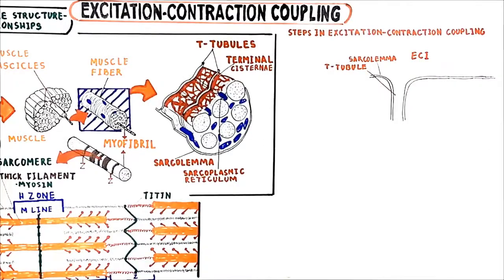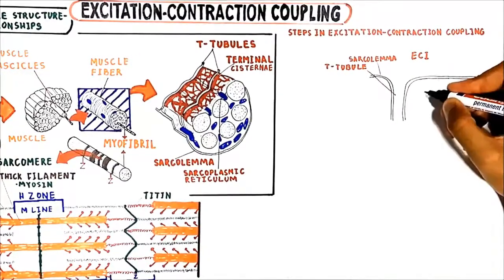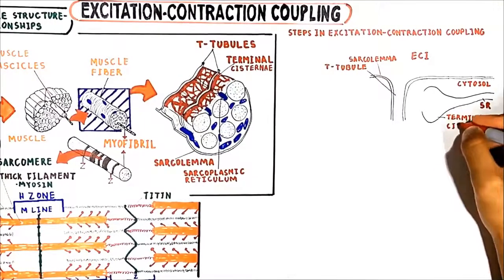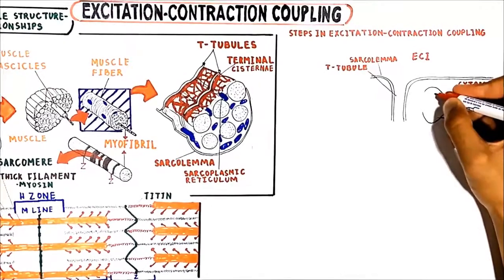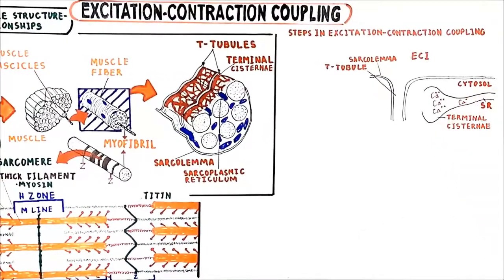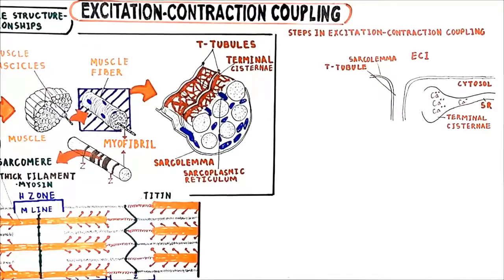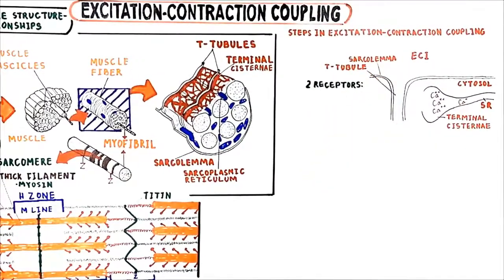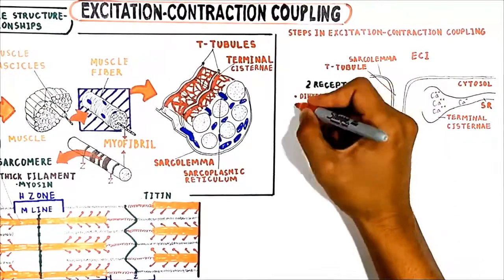In skeletal muscle, most of the calcium is stored in the terminal cisternae of the sarcoplasmic reticulum, close to the T-tubule system. The sarcoplasmic reticulum has a high concentration of calcium, and thus there is a strong electrochemical gradient for calcium to diffuse from the sarcoplasmic reticulum into the cytosol. There are two key receptors involved in this flux: the dihydropyridine (DHP) receptor and the ryanodine receptor.